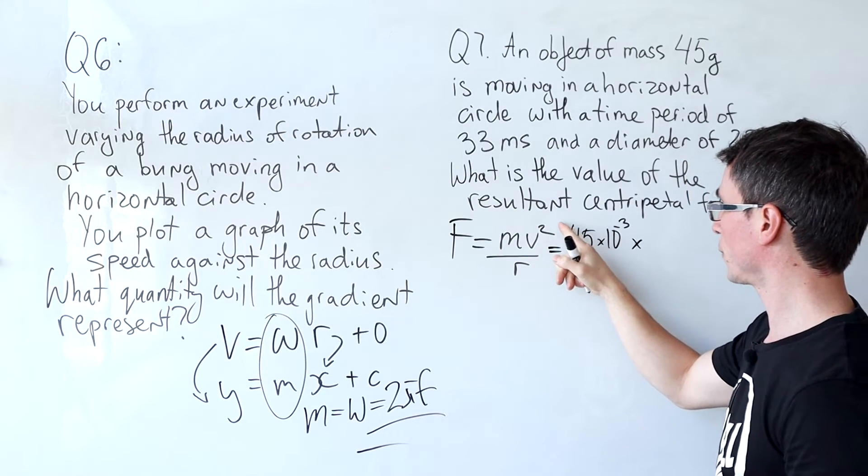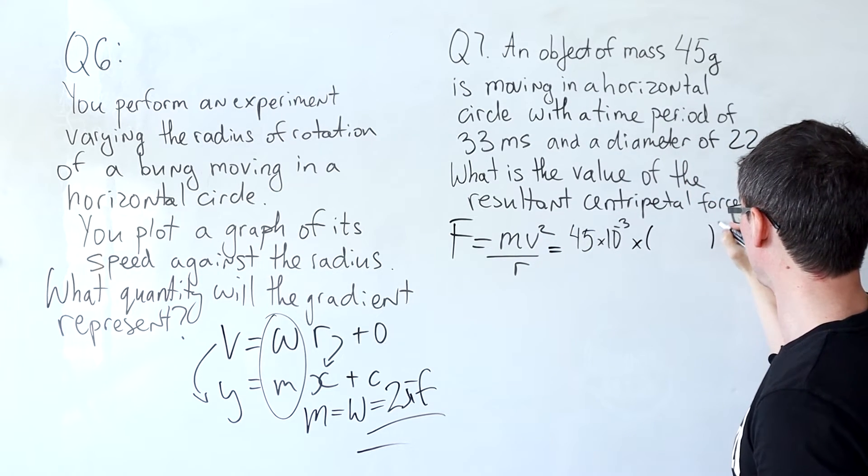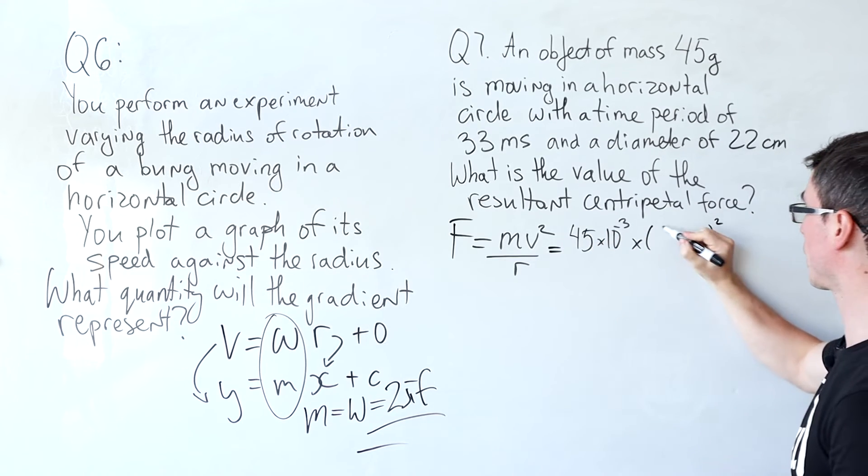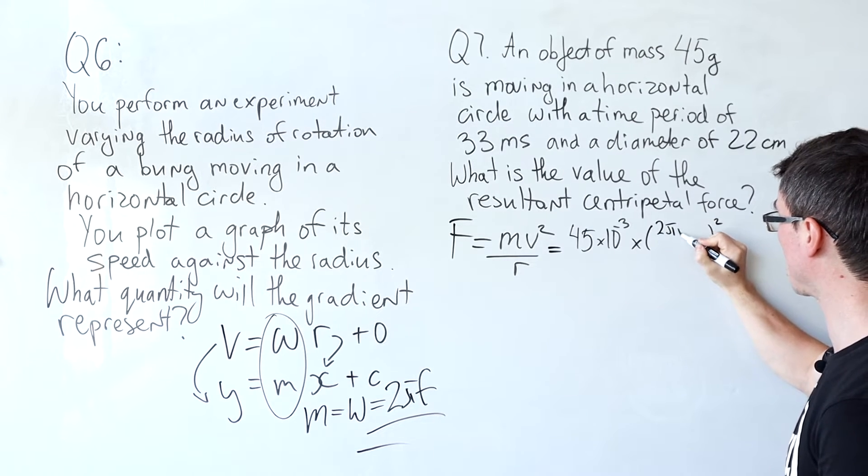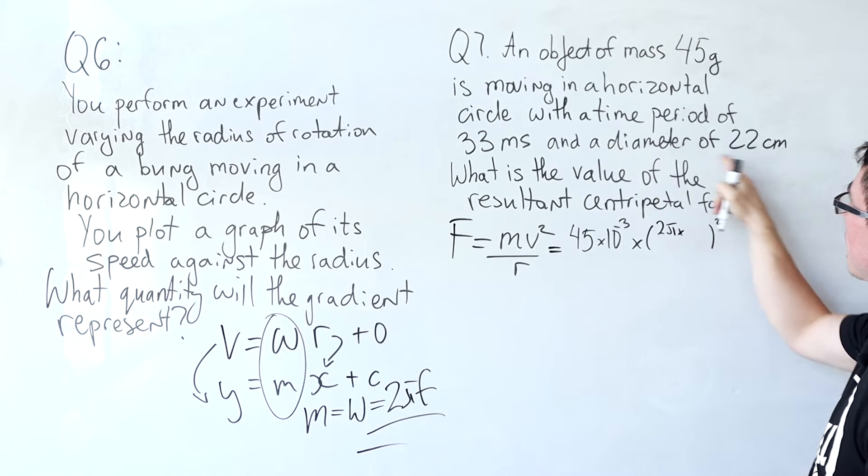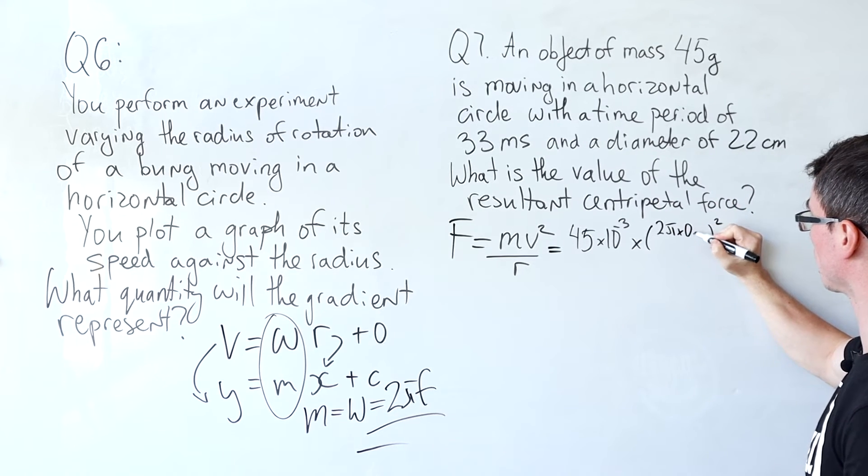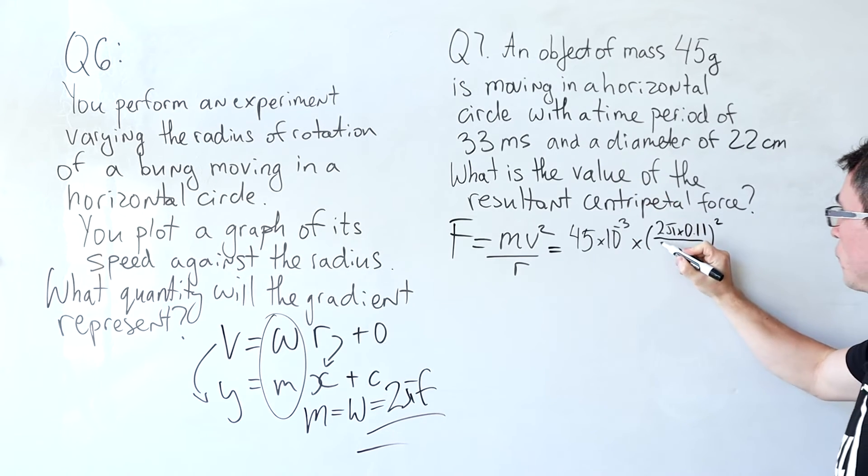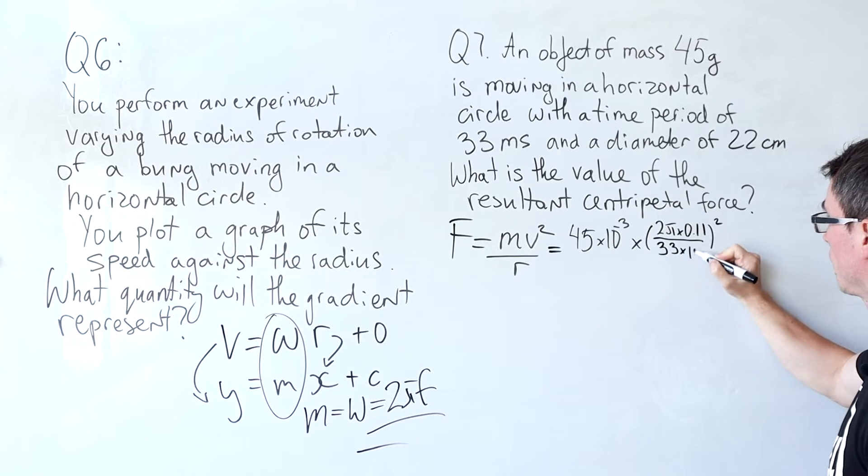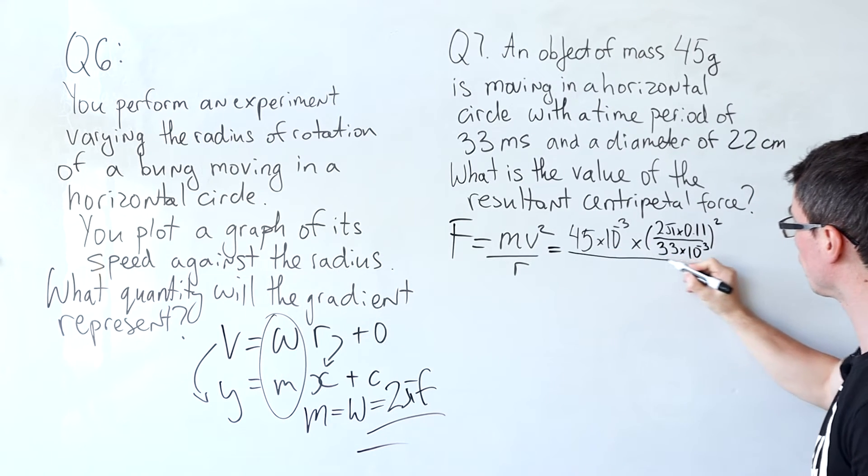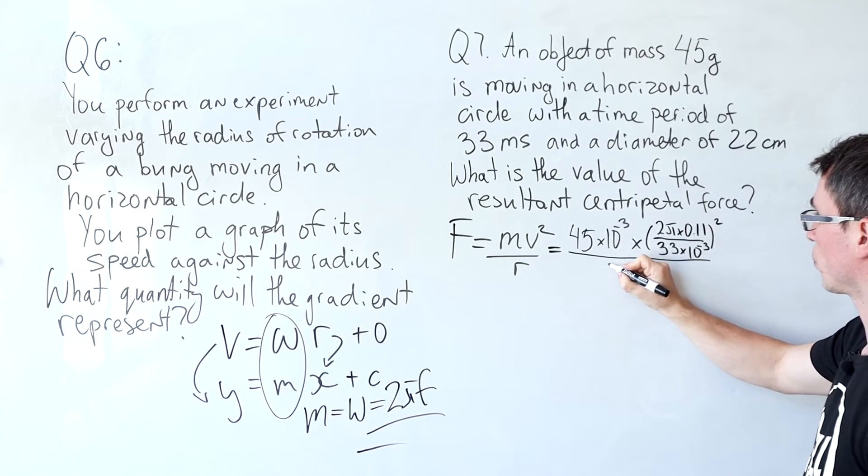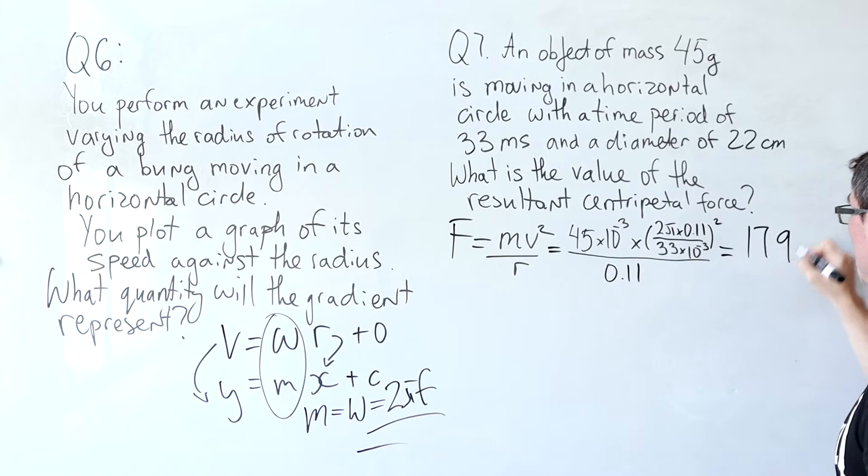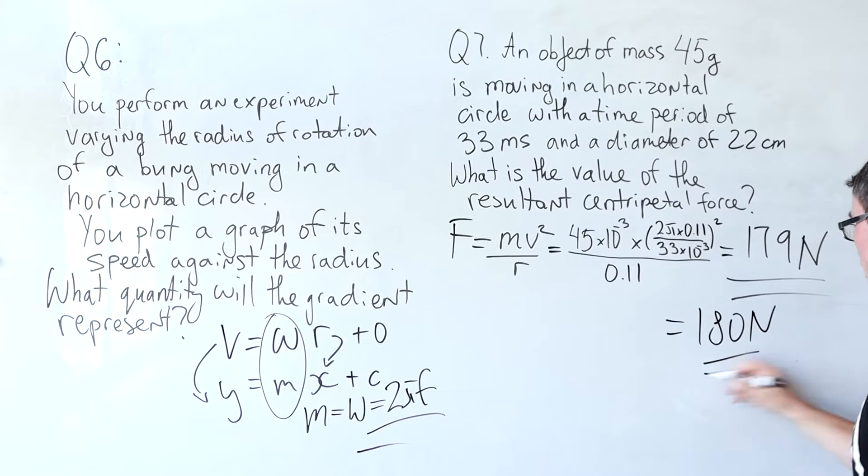Most common mistake in physics is just to forget to carry on a square so I'm going to be quite careful. I'm going to calculate the linear speed by distance over time which is the circumference of a circle, 2π times the radius. We're given the diameter so I'm going to halve that and convert it to meters, 0.11. This is 2πr divided by the time period which is 33 milliseconds, so 33 times 10 to the minus 3, then divide by the radius which was 0.11. If we do that correctly we get about 179 which up to two significant figures is 180 newtons.